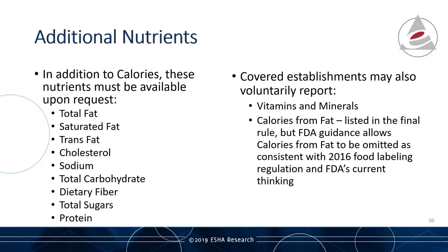In addition to reporting calories where patrons can view menu selections, covered establishments must have additional nutrient information available upon request. The nutrients that must be provided are: calories, total fat, saturated fat, trans fat, cholesterol, sodium, total carbohydrates, dietary fiber, total sugars, and protein. Covered establishments may also voluntarily report vitamins and minerals. On calories from fat: it is listed in the menu labeling final rule, but the FDA provides supplemental guidance acknowledging and allowing for the omission of calories from fat, in line with the 2016 food labeling regulations.